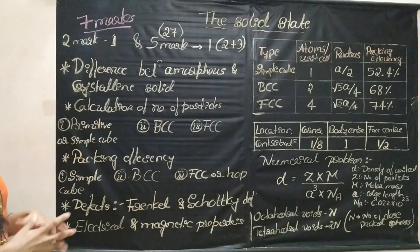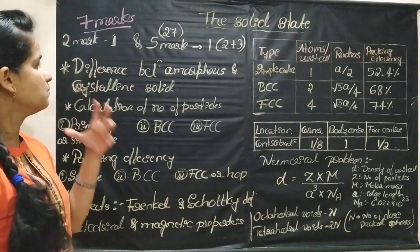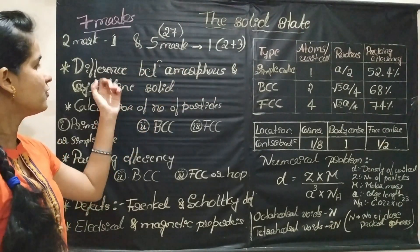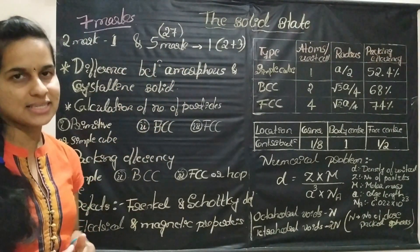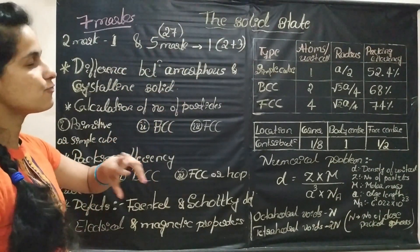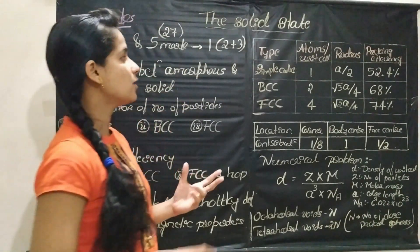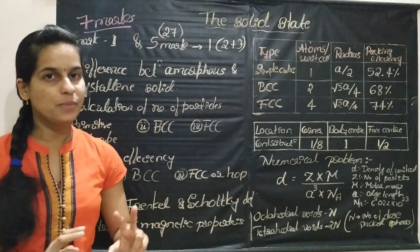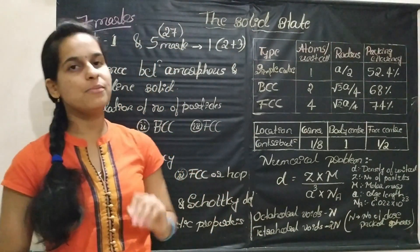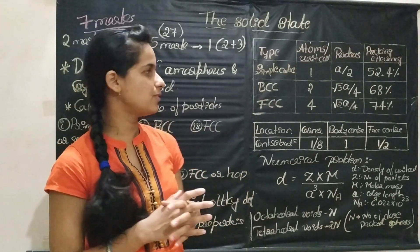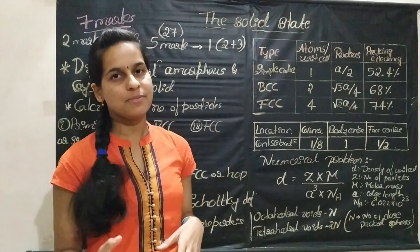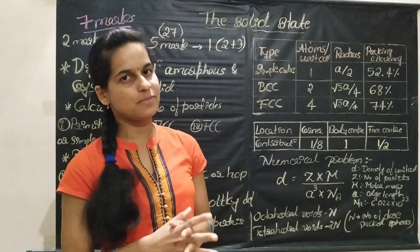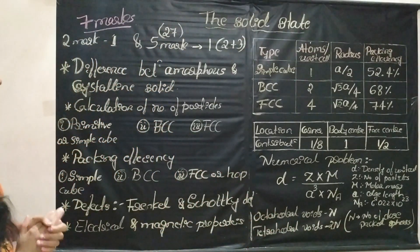The important topics are: one most important topic is the difference between amorphous and crystalline solids. It may be asked for 2 marks or 3 marks. If it is asked for 2 marks, you have to write minimum 4 differences, and if it is for 3 marks, then 6 differences must be there in the answer.